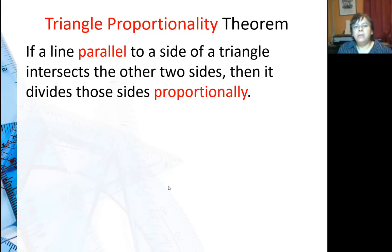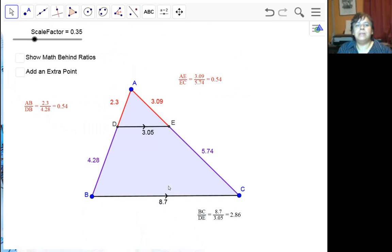Okay, so this comes from the triangle proportionality theorem. If a line parallel to the side of a triangle intersects the other two sides, then it divides those sides proportionally. So let's take a look and see what's going on.